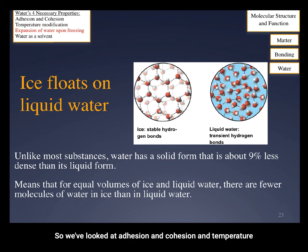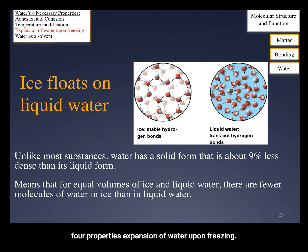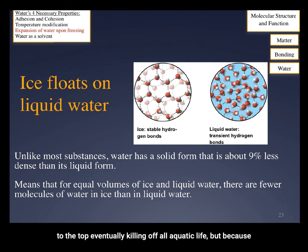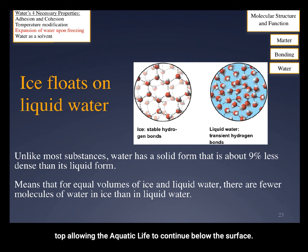We've looked at adhesion and cohesion and temperature modification. Now we're going to look at the third of the four properties: expansion of water upon freezing. Water is one of just a few substances that are less dense as a solid. Because of this, ice floats. Pond, river, and lake life relies on the ability of ice to float. If ice sank, all bodies of water would freeze from the bottom to the top, eventually killing off all aquatic life. But because ice floats, when a lake or river does freeze, the ice is on top, allowing aquatic life to continue below the surface of the ice.